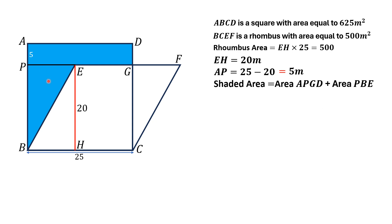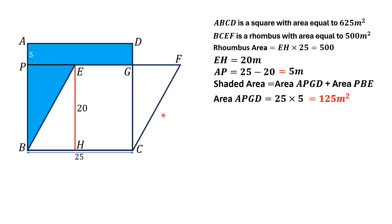Now, the area of this shaded region is equal to the area of this rectangle APGD and the area of this right triangle PBE. So we have to find these two areas and then add them up — that will be our required answer. First of all, we find the area of this rectangle. Since the length is 25 and the width is 5, so the area of this rectangle is 125 meter square.